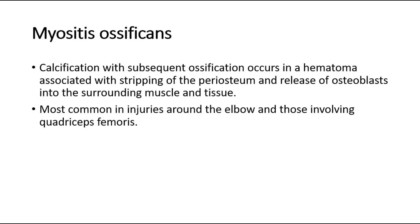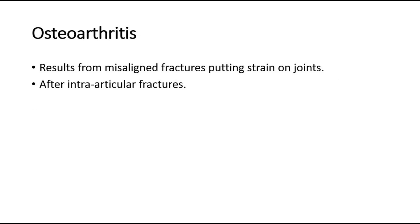Myositis ossificans involves calcification with subsequent ossification occurring in a hematoma associated with stripping of the periosteum and release of osteoblasts into surrounding muscle and tissue. It is most common in injuries around the elbow and those involving quadriceps femoris. Lastly, osteoarthritis results from misaligned fractures putting strain on joints and usually occurs after intra-articular fractures.